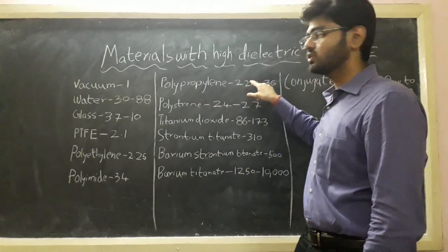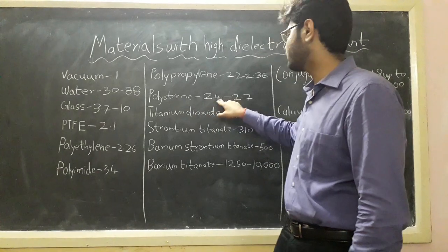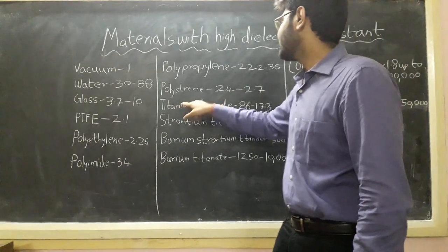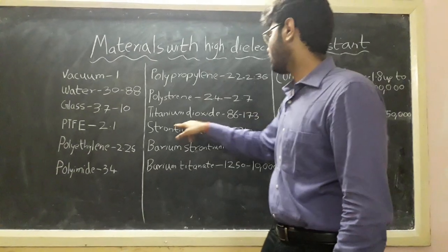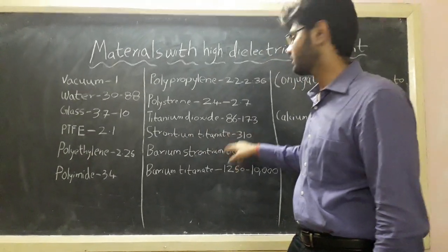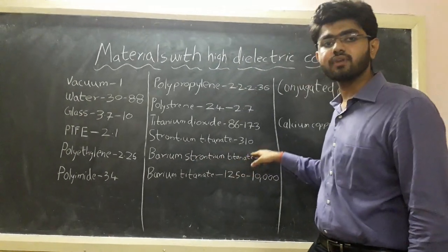Polypropylene has dielectric constant 2.2 to 2.36. Polystyrene has dielectric constant 2.4 to 2.7. Titanium dioxide has dielectric constant 86 to 173. Strontium titanate has dielectric constant 310. Barium strontium titanate has dielectric constant 500.